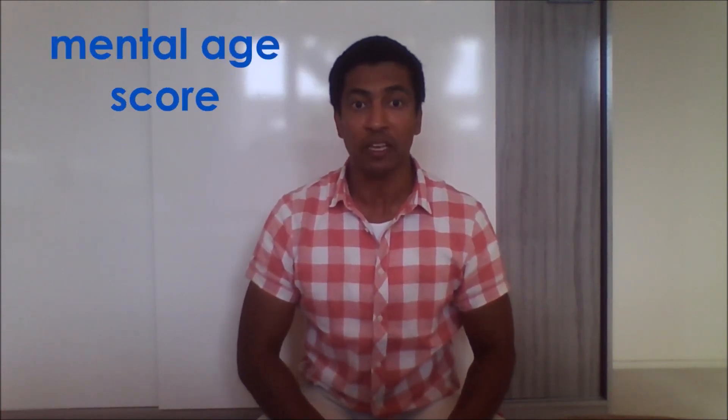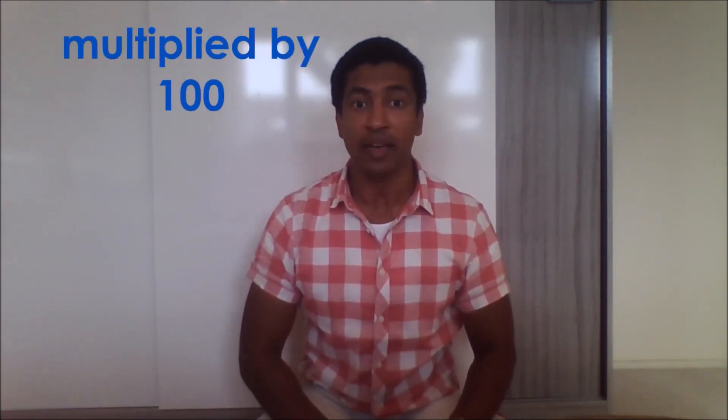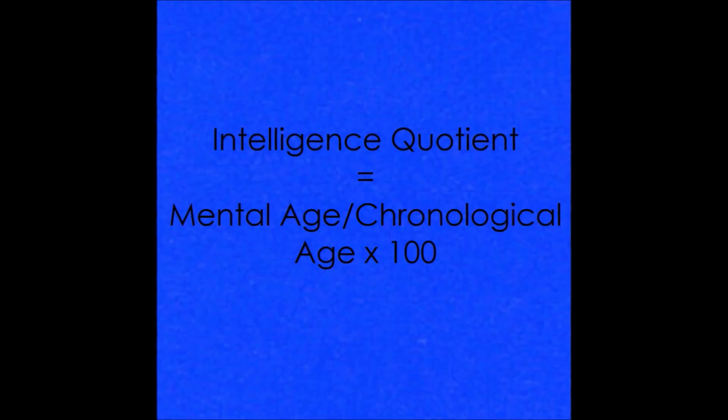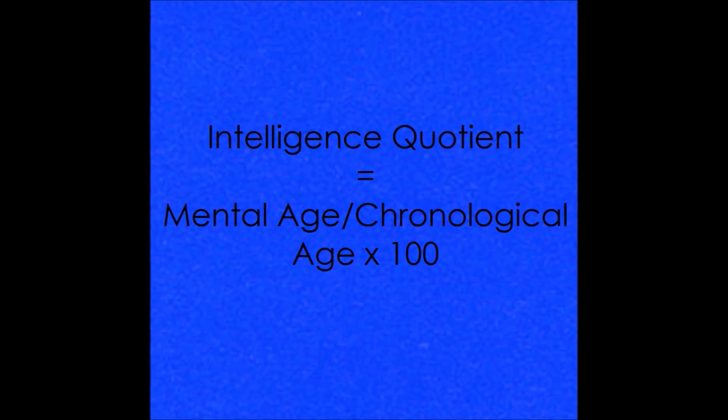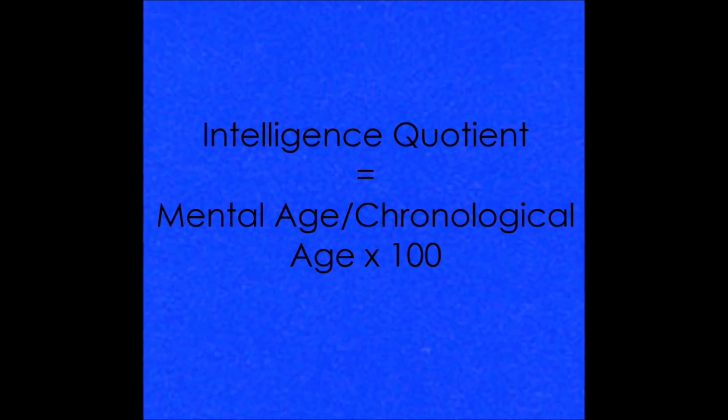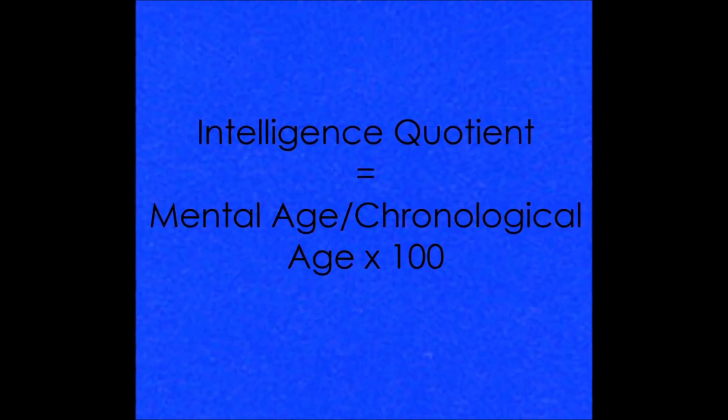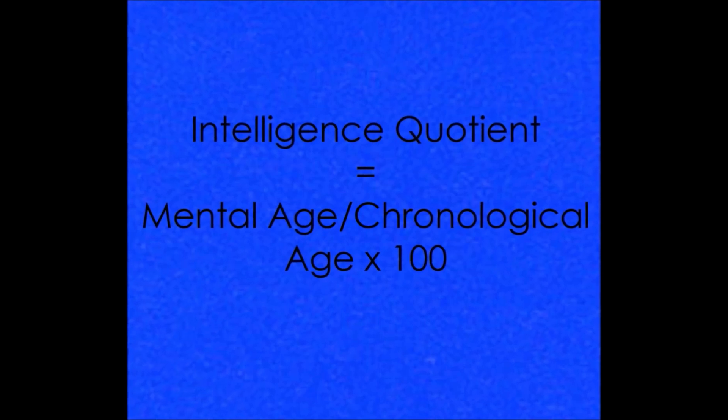Historically, IQ was a score obtained by dividing a person's mental age score — obtained by administering an intelligence test — by the person's chronological age, both expressed in terms of years and months. The resulting fraction was multiplied by 100 to obtain the IQ score. So, a person's intelligence quotient meant his or her mental age divided by his or her chronological age, times 100.